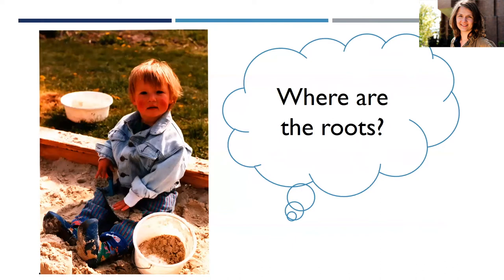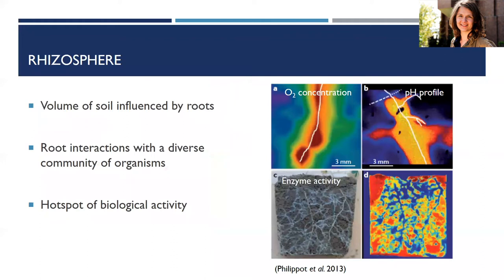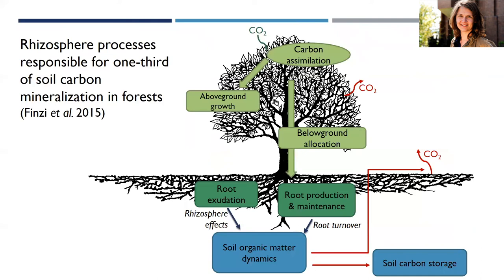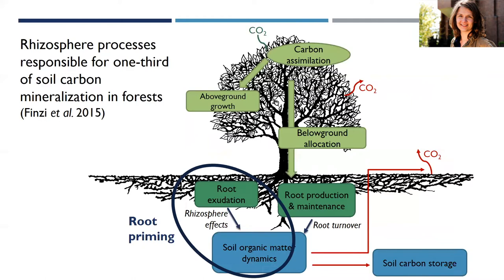The area where roots and soil meet is something I find very interesting. This interface is called the rhizosphere — the place where roots interact with a diverse community of microorganisms, invertebrates, and other plant species. This region of the soil has been labeled as a hotspot of biological activity with accelerated rates of carbon and nutrient cycling, and a recent study showed that rhizosphere processes may be responsible for up to one-third of all soil carbon mineralized in forests.